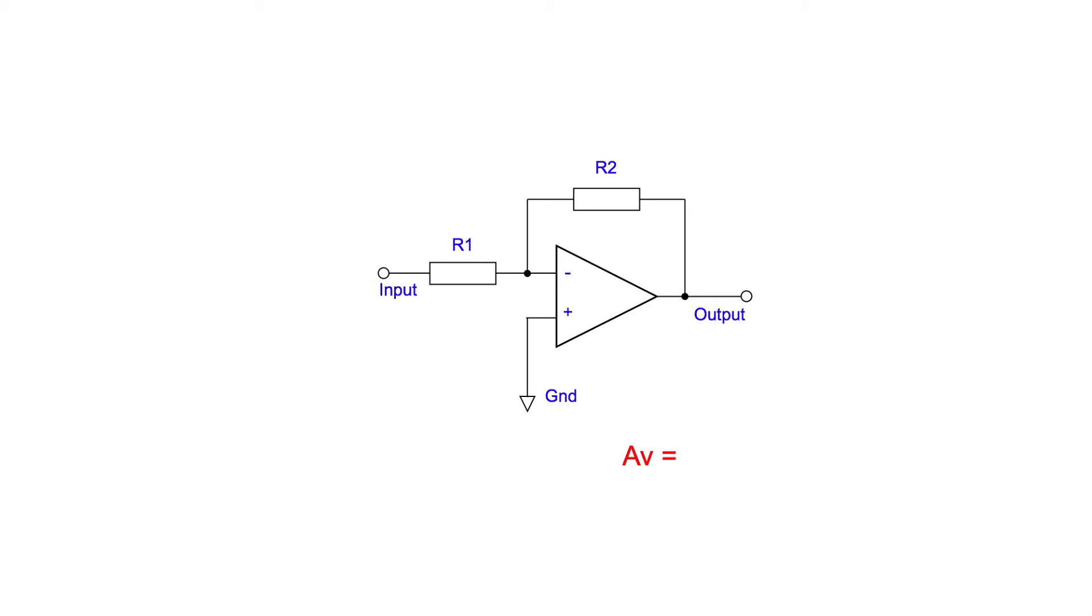Looking at the gain of the standard inverting op-amp circuit, we see that AV, the voltage gain, is equal to minus R2 upon R1. The minus sign is there because the output is the inverse of the input. So for any input to the summing amplifier, the gain is minus R2 upon the input resistor for that particular leg. Let's call it R1x.